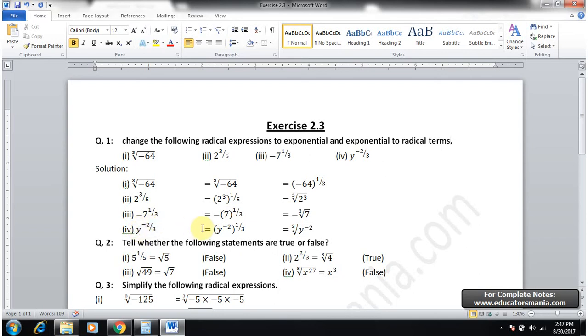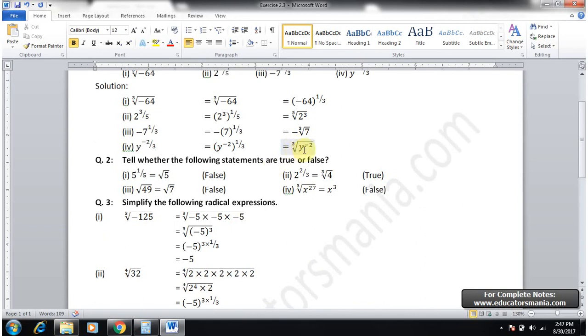Question 2: Tell whether the following statements are true or false. Five to the one over five equals fifth root of five. This is false. Second, two power two by three equals third root of four.